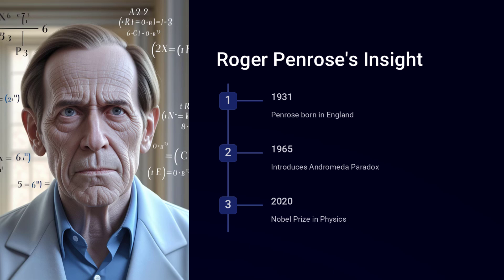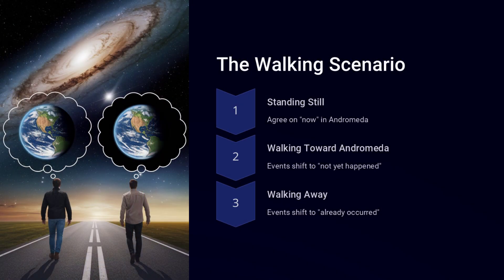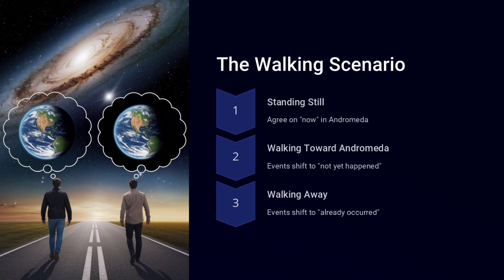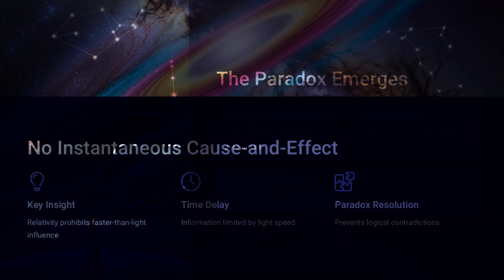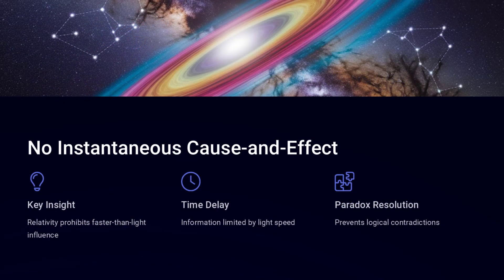But according to Einstein's theory of relativity, their movement isn't just changing how they experience time locally—it's actually shifting their perception of what is happening right now in distant parts of the universe.